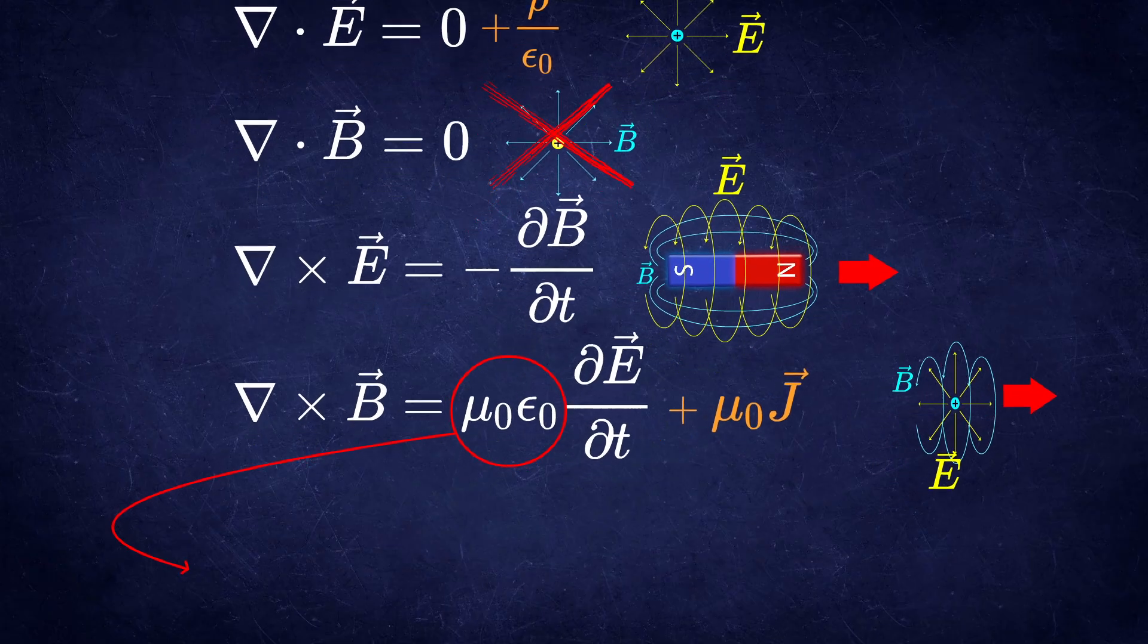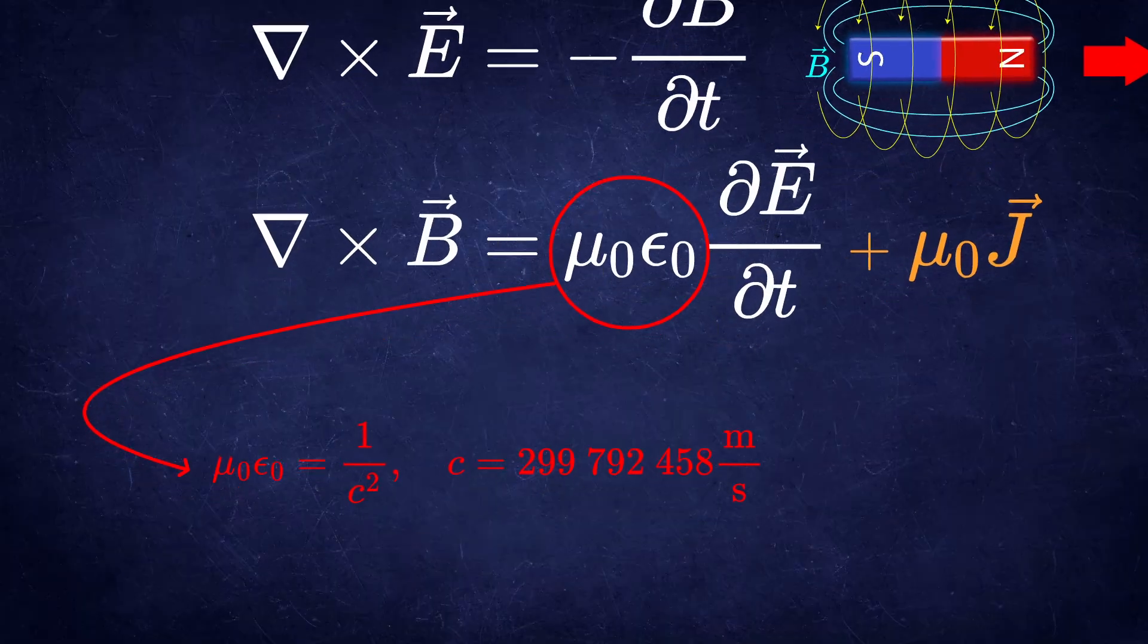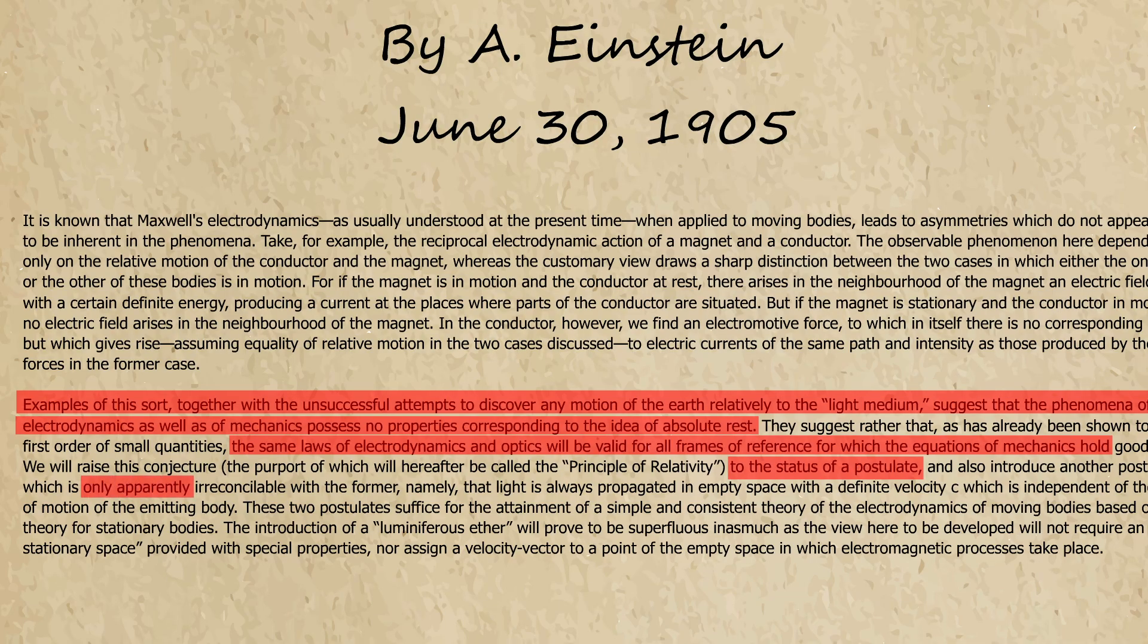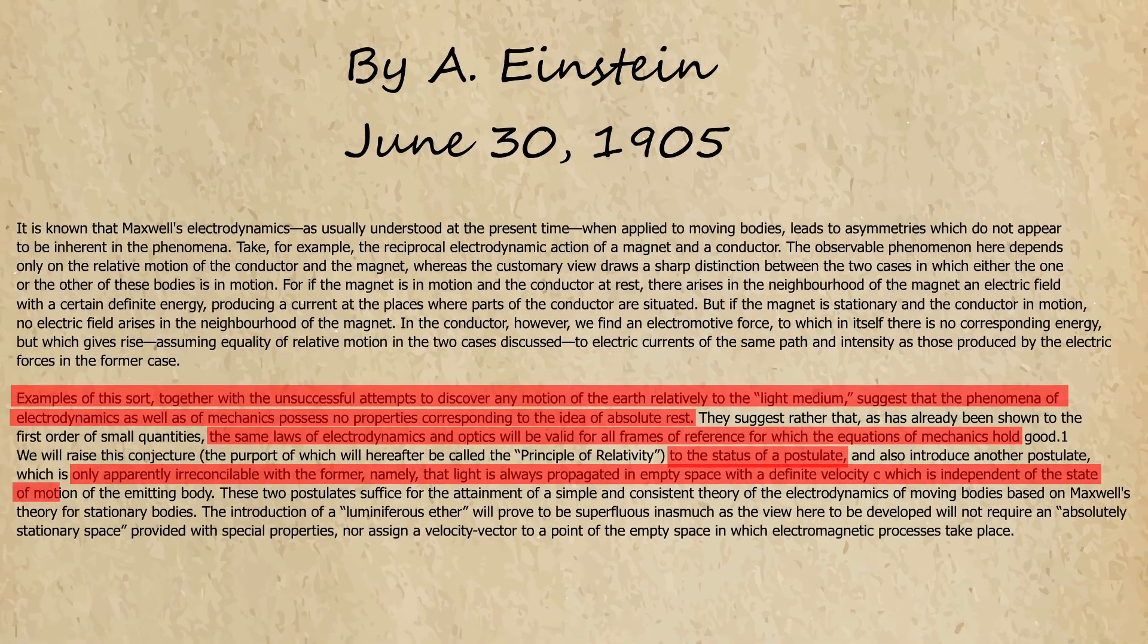Then, since there is no need for light medium, despite the velocity of light appearing in the Maxwell's equations of electrodynamics, Einstein introduced another postulate, which, as he says, is only apparently irreconcilable with the former—namely, that light is always propagated in empty space with a definite velocity c, which is independent of the state of motion of the emitting body.